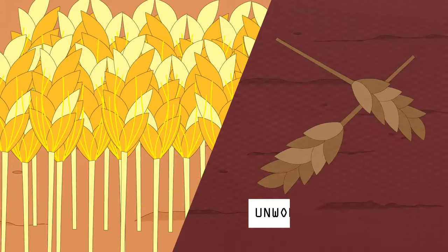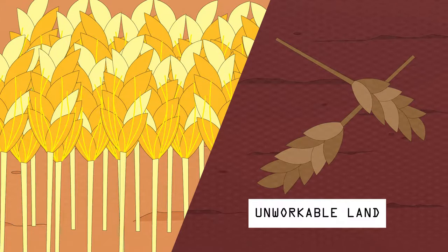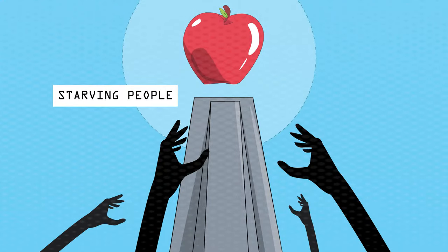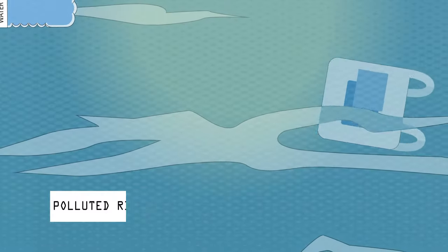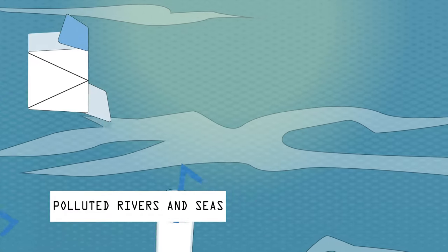Once fertile farmland has become unworkable as soil turns into dust. The number of people not getting enough food increases. Rivers and seas are polluted, the provision of clean water an ever increasing problem.